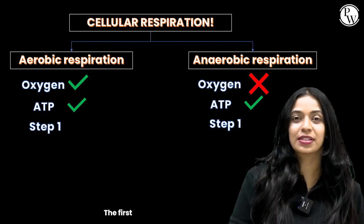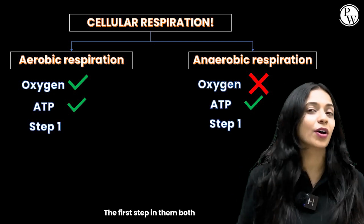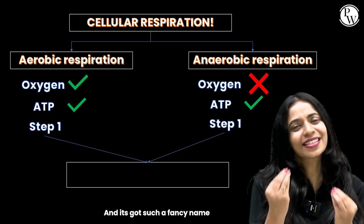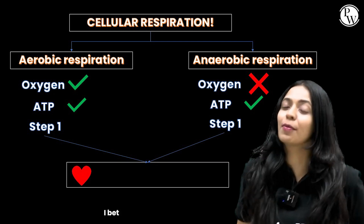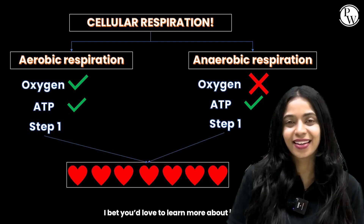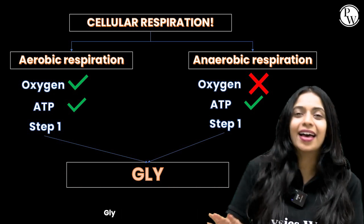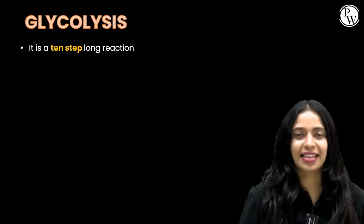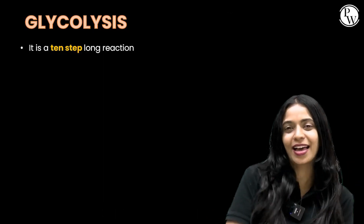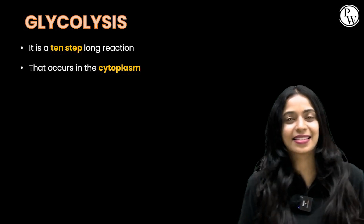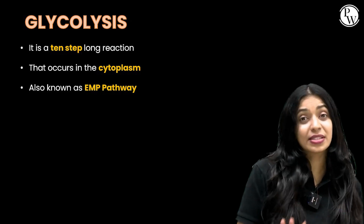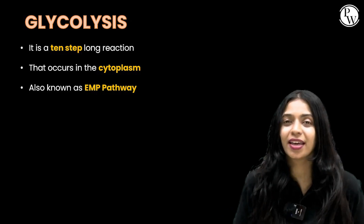The first step in them both is the same, and it's got such a fancy name. I bet you'd love to learn more about it. Glycolysis — it is a 10-step long reaction that occurs in the cytoplasm, also known as the EMP pathway.